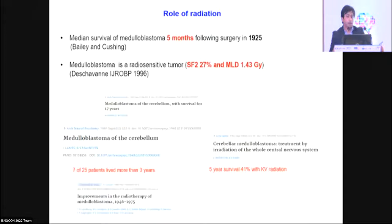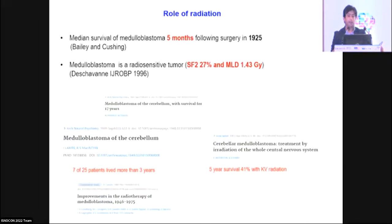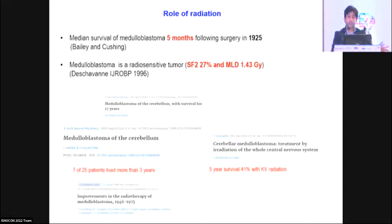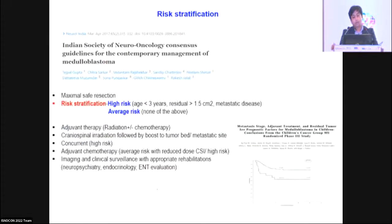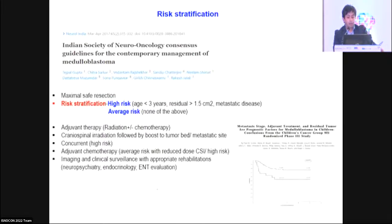The role of radiation is well established — unlike meningiomas where debate continues, for medulloblastoma and embryonal tumors radiation has been established for 50 to 60 years and massively improves survival. These are very radiosensitive tumors. Earlier, in the 1940s–50s, survival in medulloblastoma was only case reports; then case series emerged using kilovoltage beams. Now we have meta-analyses and systematic reviews. Risk stratification is critical in deciding radiation dose and sequencing.